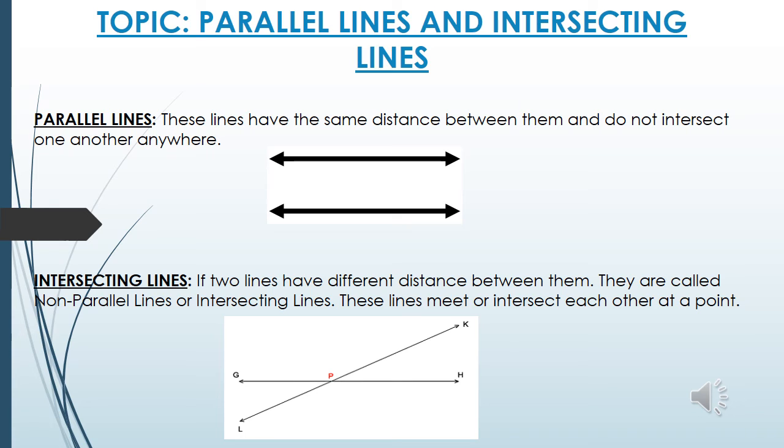If two lines have different distances between them, they are called non-parallel lines or intersecting lines. These lines meet or intersect each other at a point.